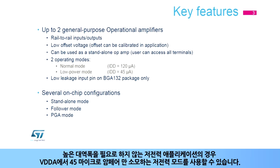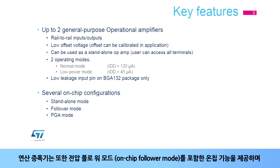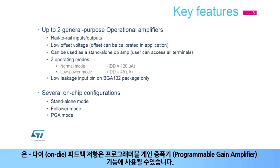For low-power applications which do not need high bandwidth, a low-power mode is available which only consumes 45 micro-amps from VDDA. For current sense applications, a dedicated low-leakage input pad is available on the BGA-132 package. The op-amps also provide on-chip functions including voltage follower mode, while their on-die feedback resistance can be used for the programmable gain amplifier function.